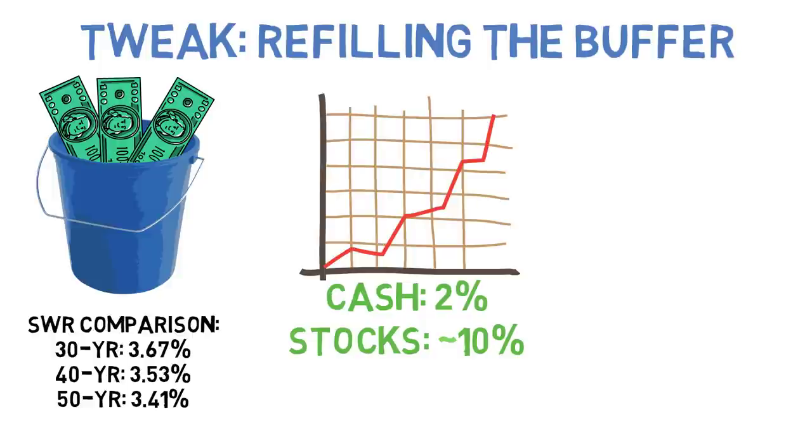Therefore, what we're essentially doing when we refill the cash buffer is taking money out of an asset that's giving us average returns of 10% per year and putting it into something that averages 2% per year.